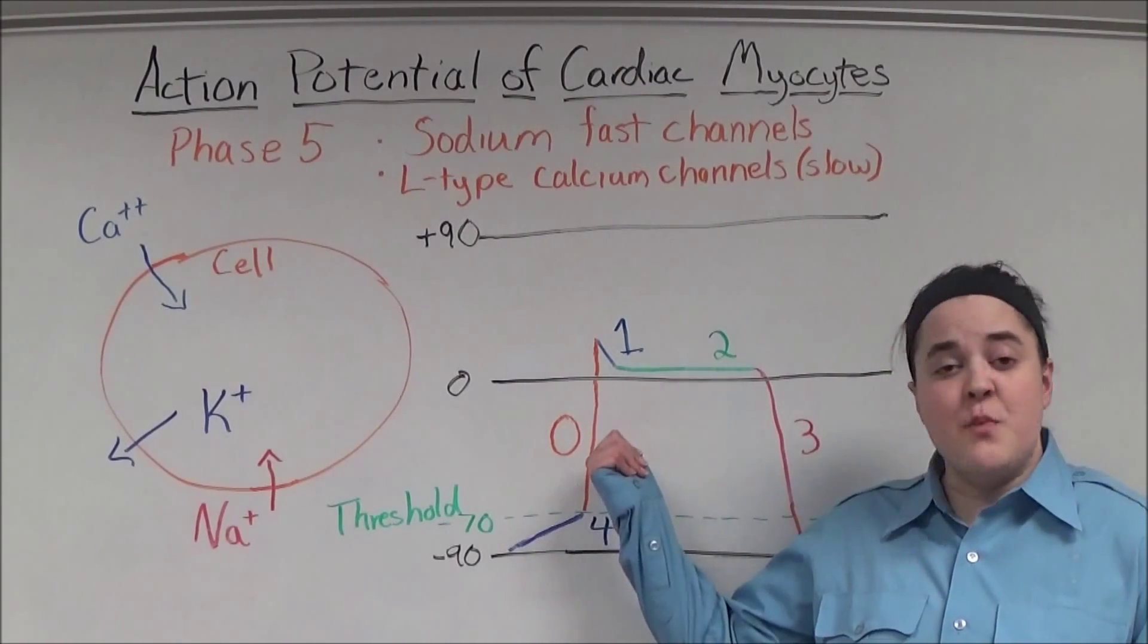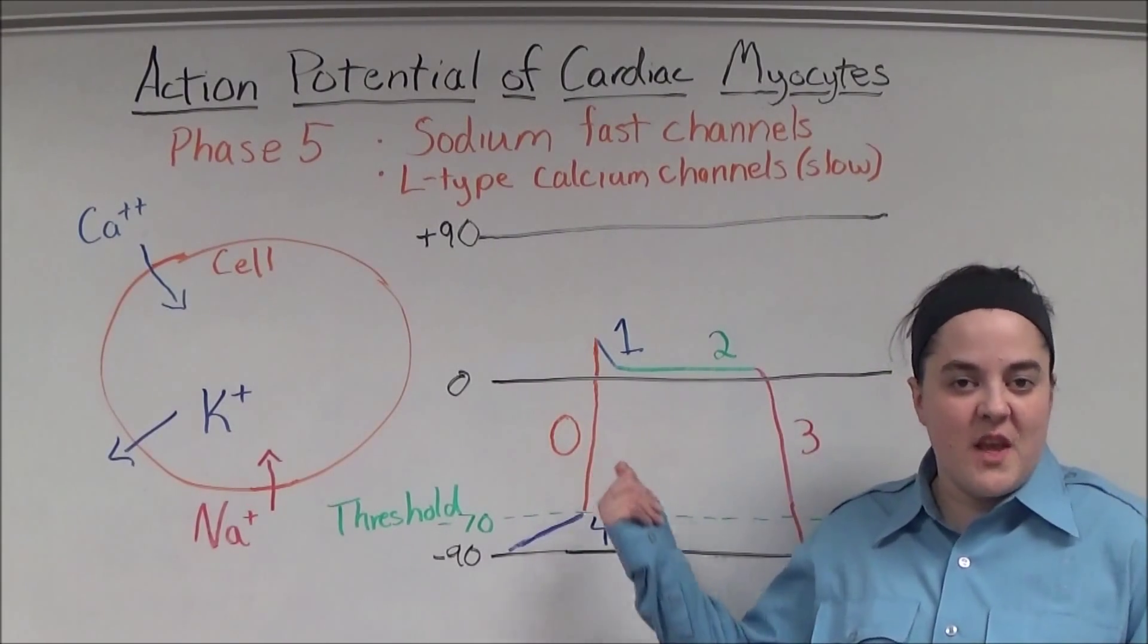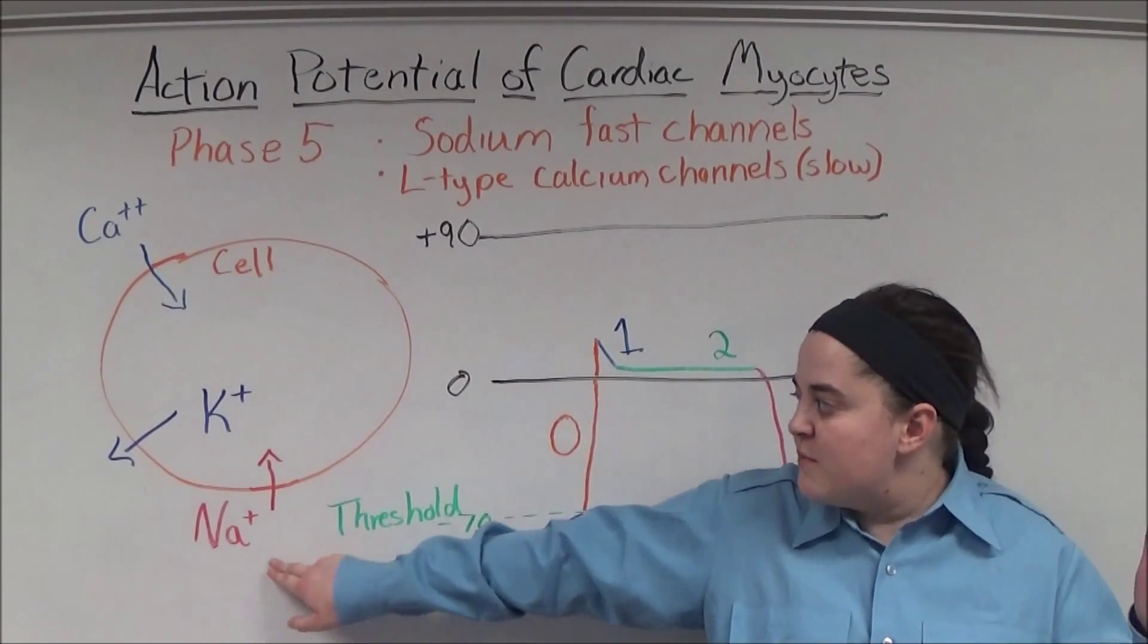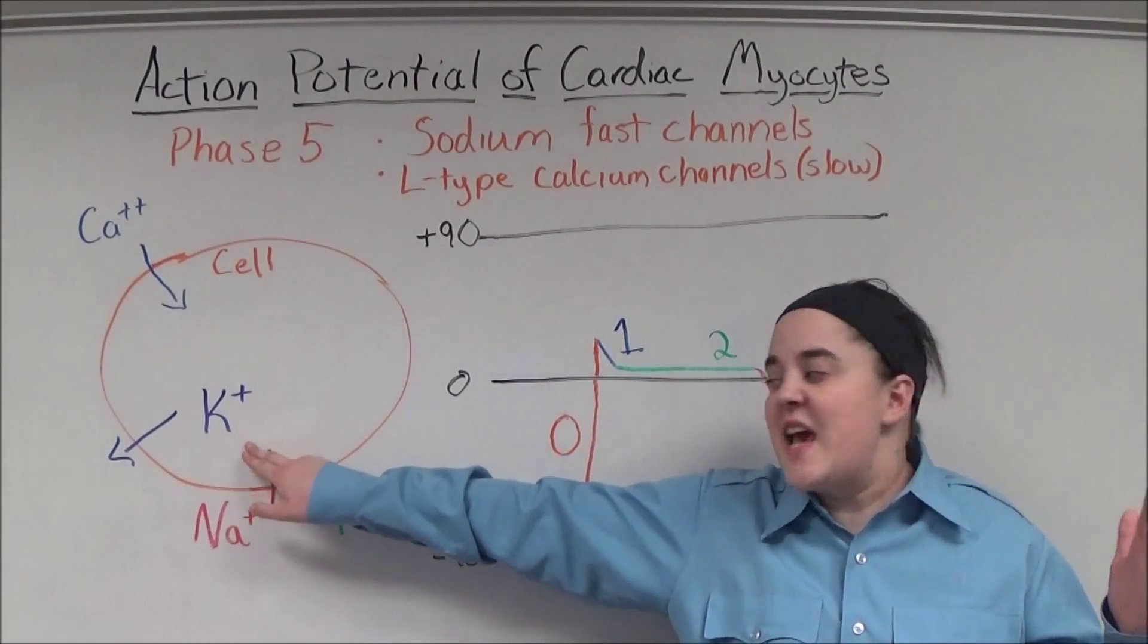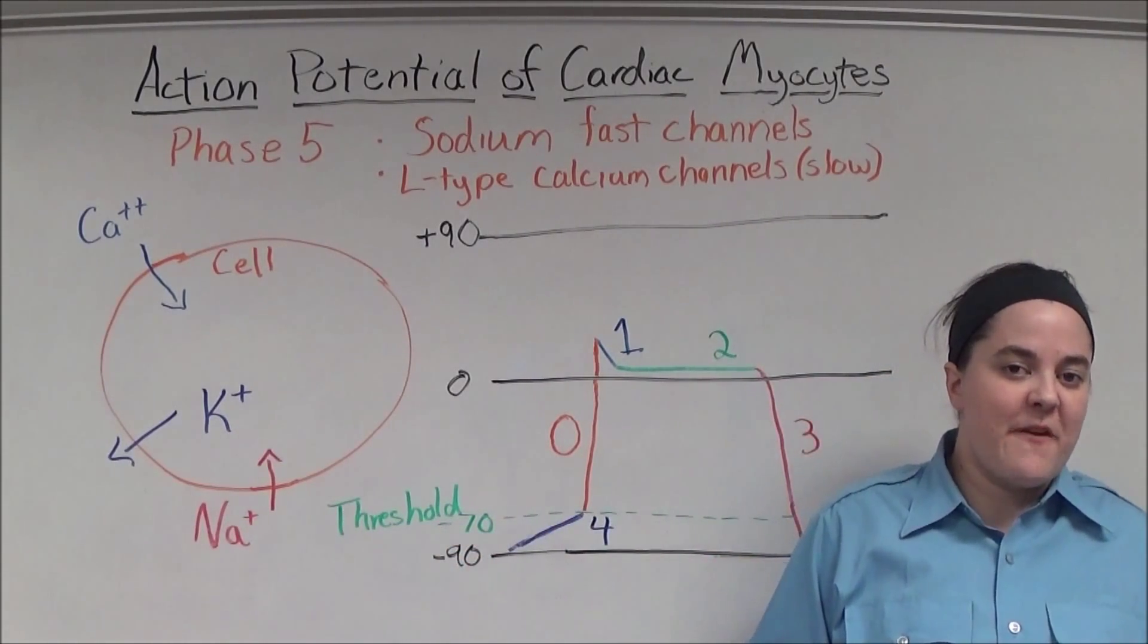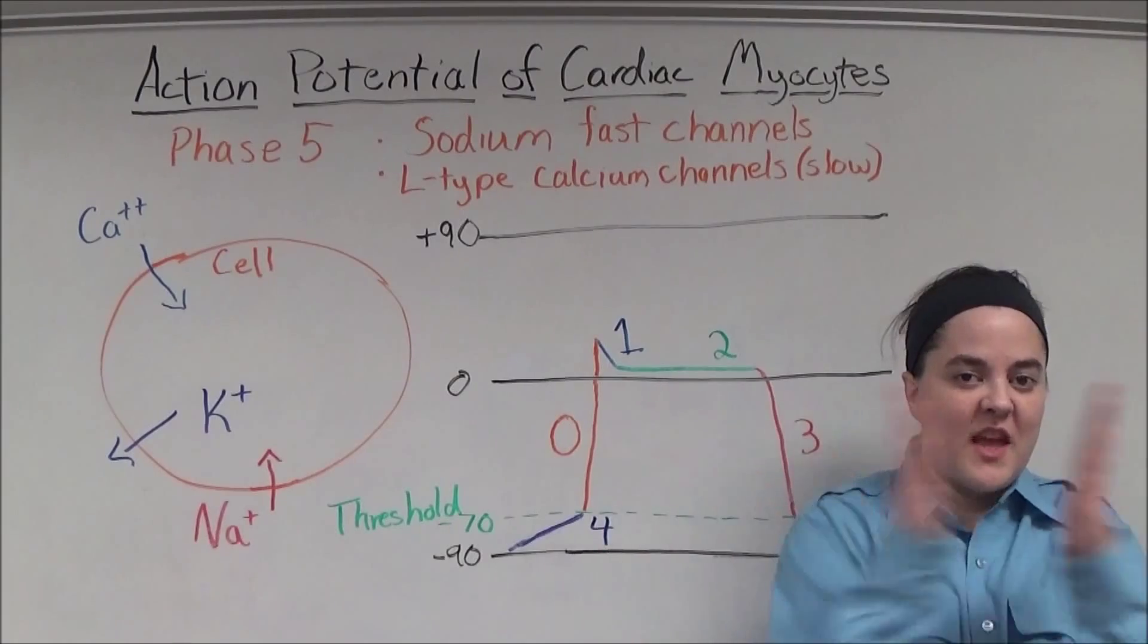Phase zero is the depolarization of the cell. It begins when the sodium fast channels open, allowing sodium to rush into the cell while potassium is pumped out of the cell. And as quickly as the sodium fast channels opened, they close.